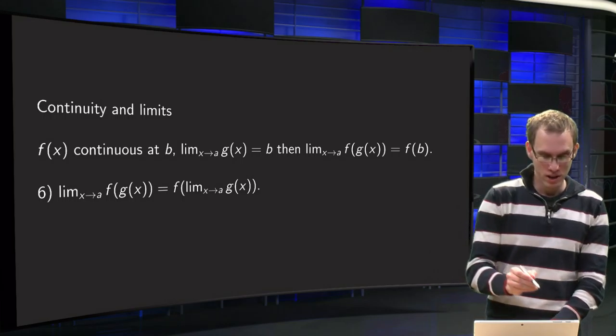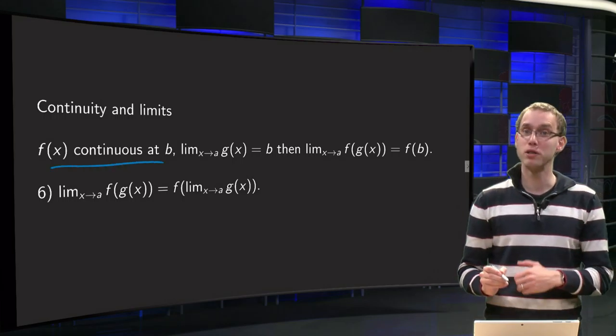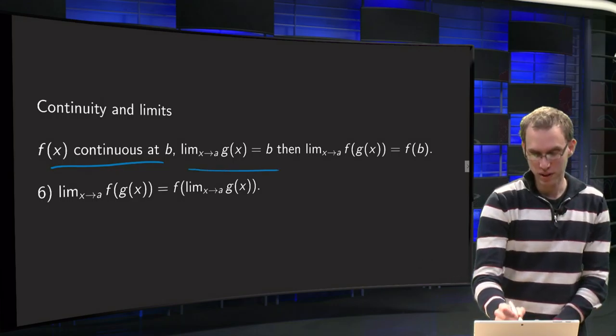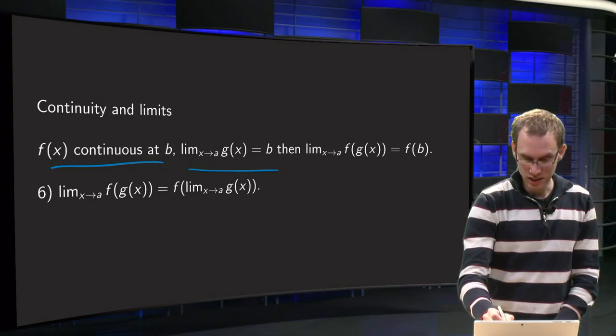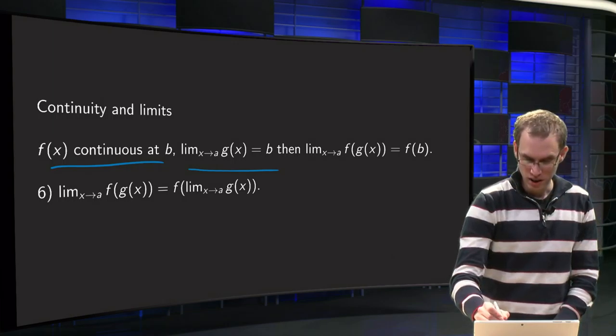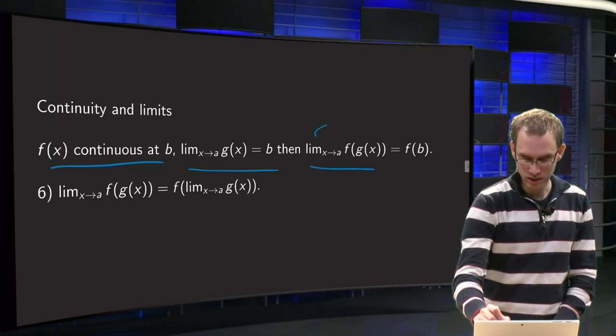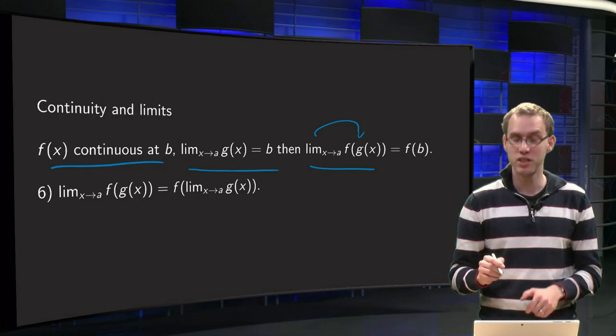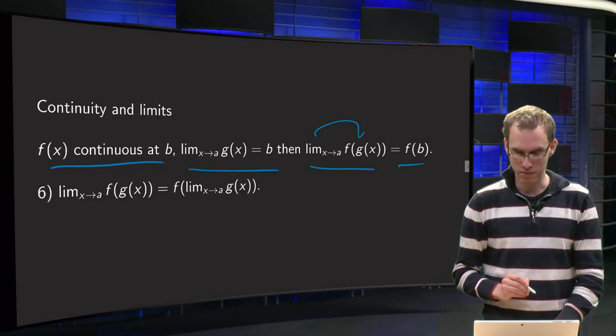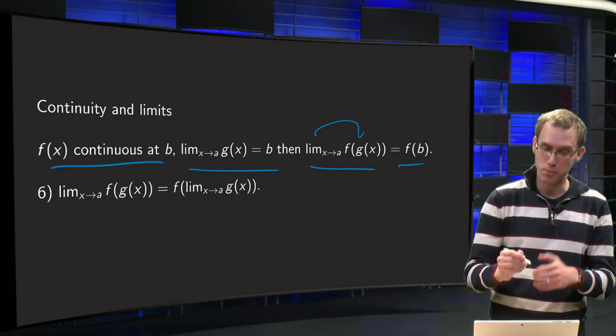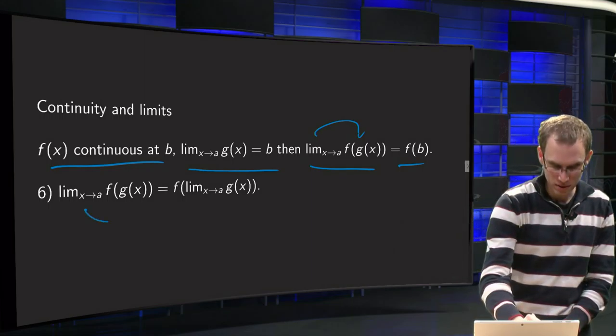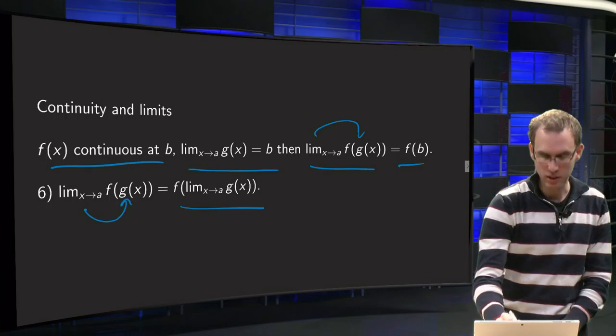So what is the rule? If f is continuous at some point b, if limit x to a of g(x) equals b, then you can basically take the limit of the composition x to a of f of g. You can take the limit inside: limit of f(g(x)) equals f of limit g(x), and the limit g(x) equals b, so that gives you f(b). So rule 6 summarized: you can take the limit inside and then you get this result.